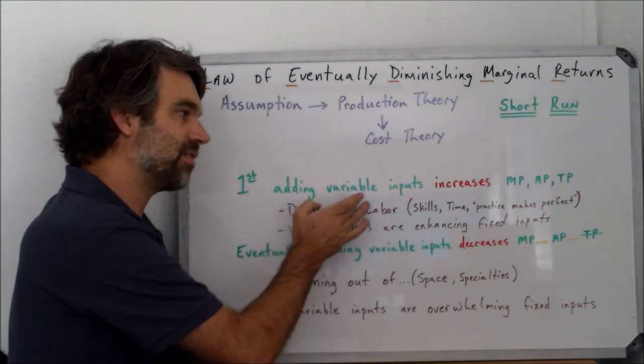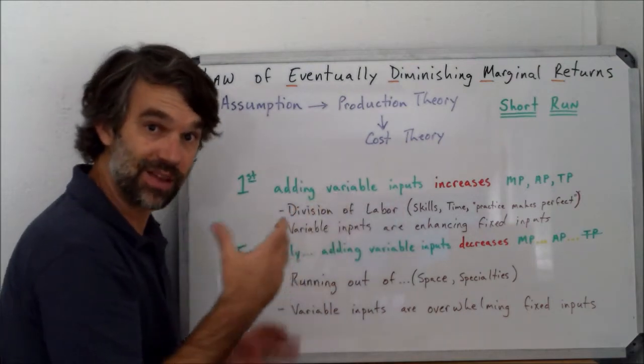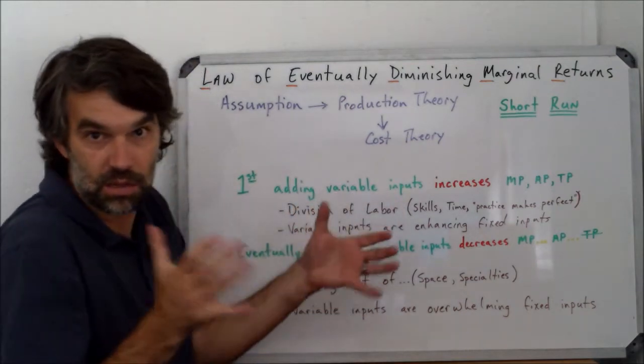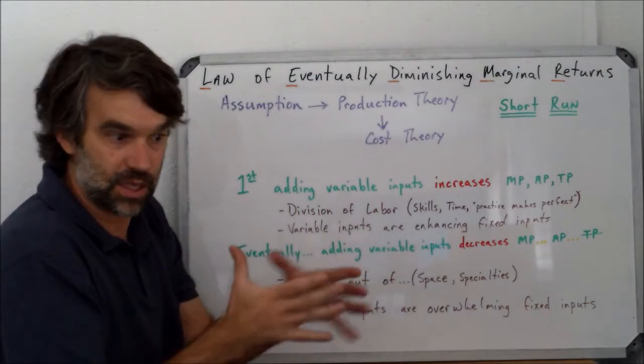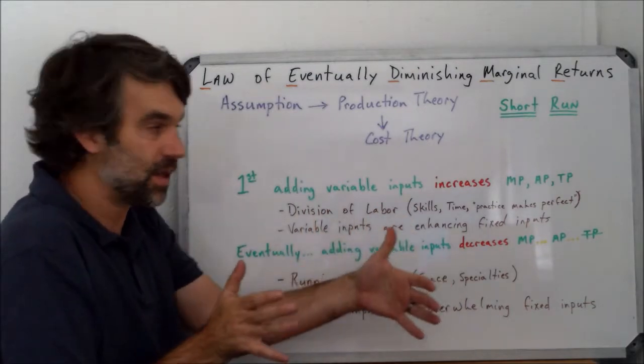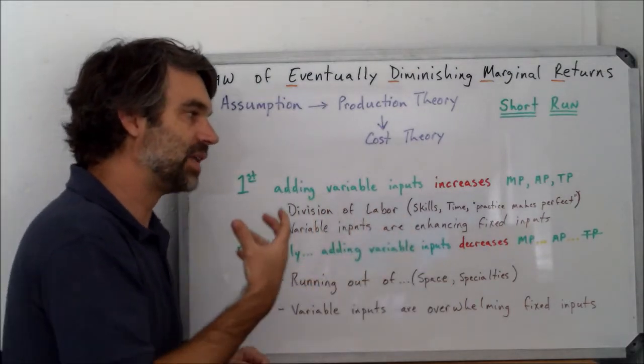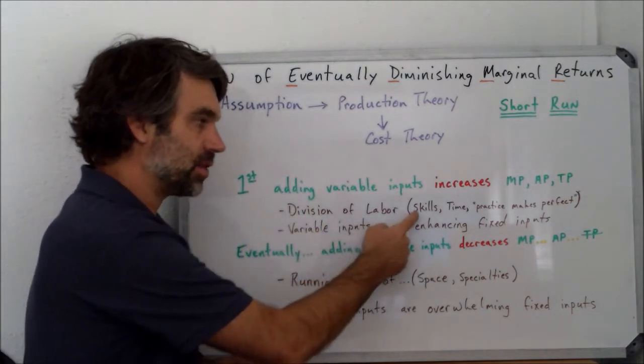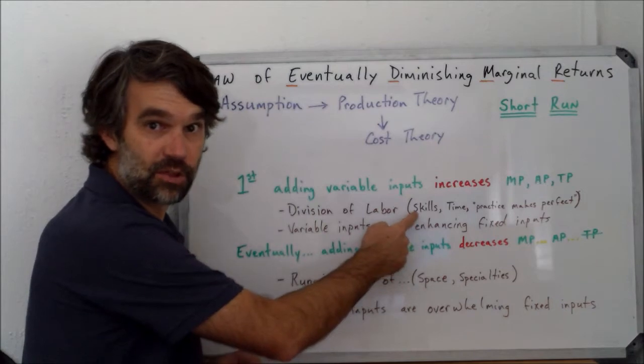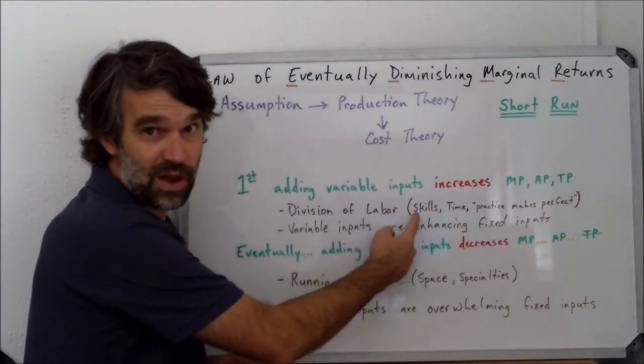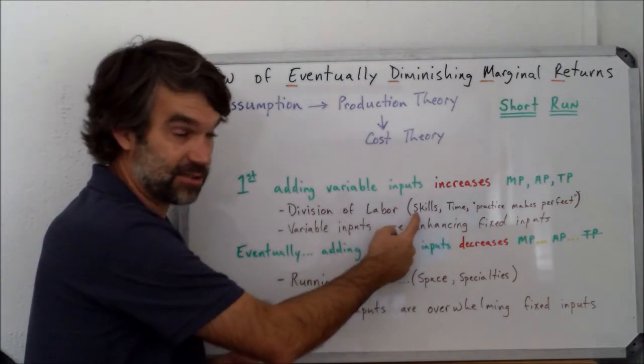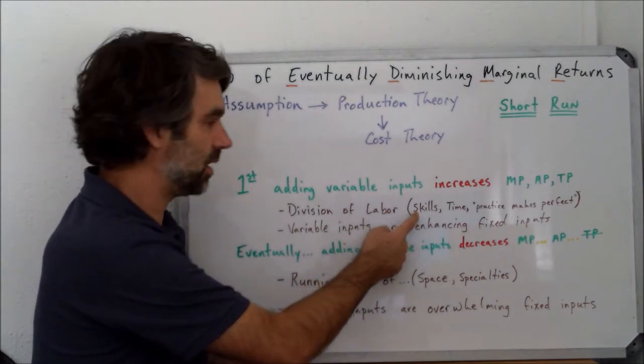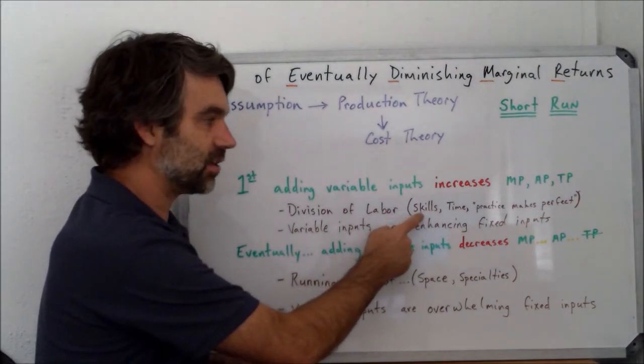So one key thing about adding variable inputs—in this case, my fixed input would be maybe the size of my bakery. It's going to be just a set amount of space, but I've got plenty of room to bring in more workers. Some of those workers probably are better at some of those jobs than I am anyway. Maybe they're better marketers, maybe they're better advertisers, they're definitely better bakers because I'm horrible. So they may have better skills.